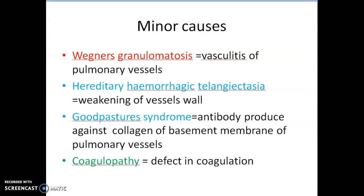Hereditary haemorrhagic telangiectasia produces Haemoptysis by weakening the vessel wall. Goodpasture syndrome produces Haemoptysis by antibodies produced against collagen of the base membrane of pulmonary vessels, and coagulopathy produces Haemoptysis by a defect in coagulation. That's all about the causes and mechanisms behind Haemoptysis. Thank you.